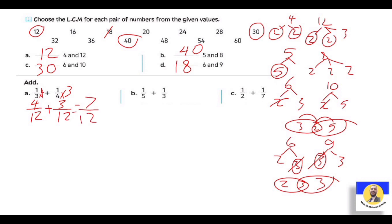The next one: 1 over 5 plus 1 over 3. هم prime numbers، يبقى نخليهم 15. الـ five بقت 15: عملنا × 3، يبقى 1 × 3 = three. والـ three بقت 15: عملنا × 5، يبقى 1 × 5 = five. So the answer is eight over 15.